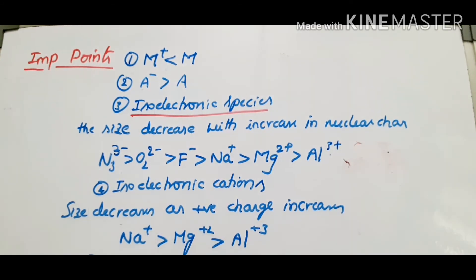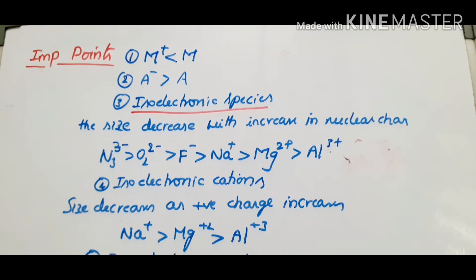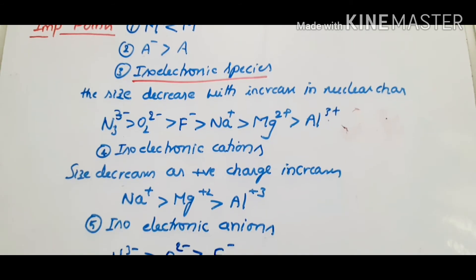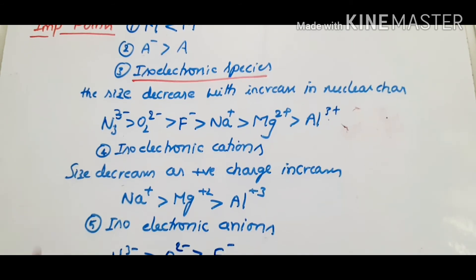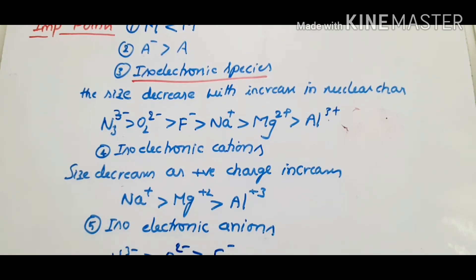Isoelectronic cations: the size decreases as positive charge increases.